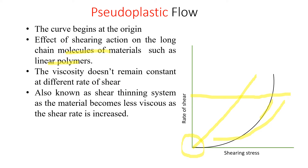Once we increase the shearing stress, the molecules which were disarranged will form an arranged structure and align themselves along their long axis. This orientation reduces the internal resistance to flow, resulting in a greater rate of shear at each successive shearing stress. In addition, some of the solvent may also be released, resulting in an effective lowering of both the concentration and size of the dispersed molecules.